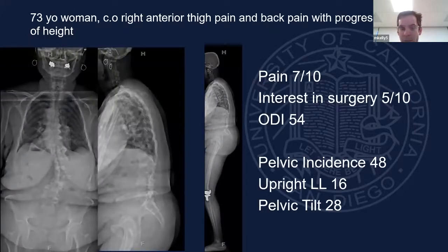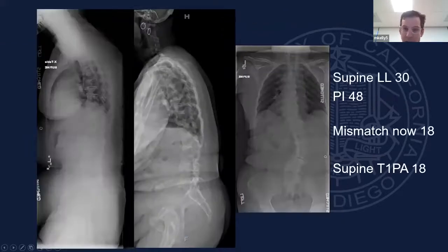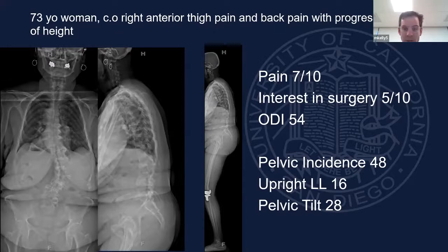There's a 73-year-old woman who complains of right anterior thigh pain. She has back pain and a progressive loss of height. Her VAS pain is 7 out of 10. Her interest in surgery is 5 out of 10. That is an interesting PROM that we collected at Wash U on a visual analog scale — it helped guide the conversation with patients. If they had no interest in surgery and their problems were reasonably manageable, you didn't need to talk about surgery. The really interesting ones were myelopathy patients who had no interest in surgery, and you have to give them a discussion about the natural history.